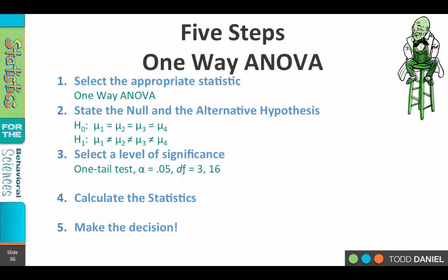So one-tail, two-tailed, it really starts to become immaterial at this point. But the alpha level is still going to be 0.05, and our degrees of freedom 3 and 16.